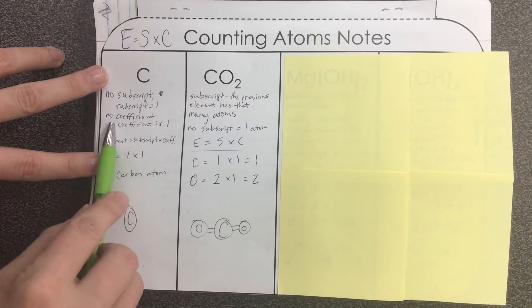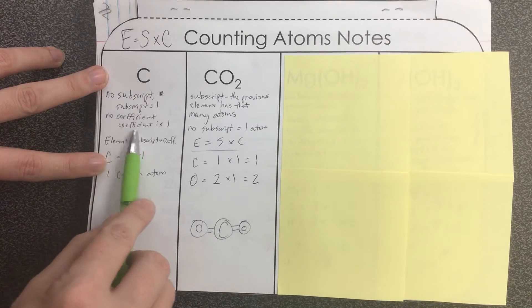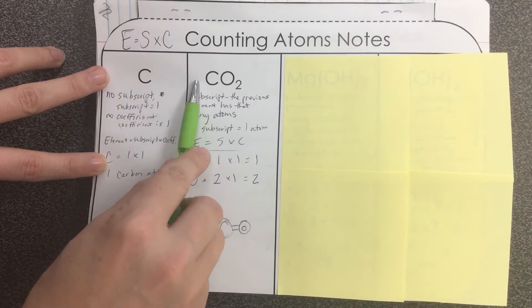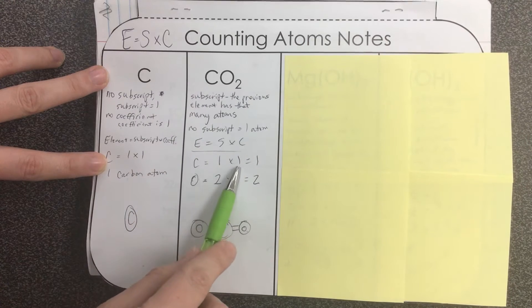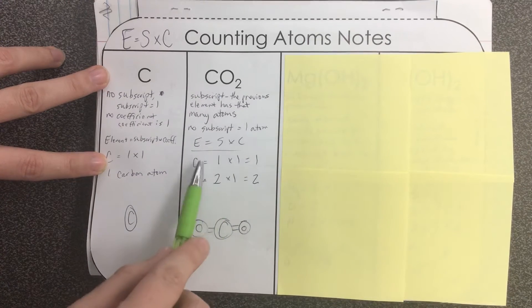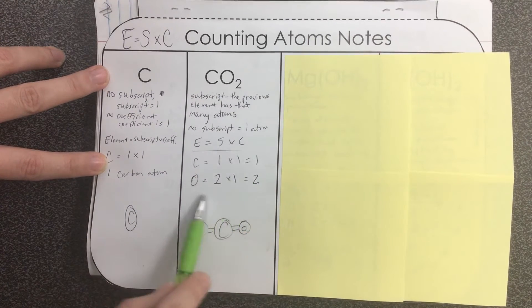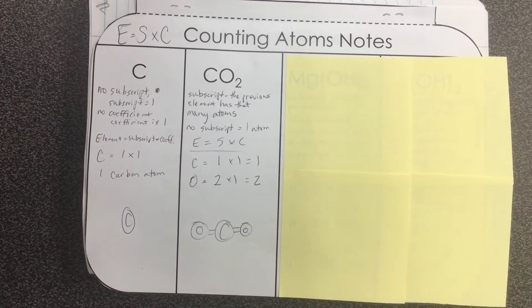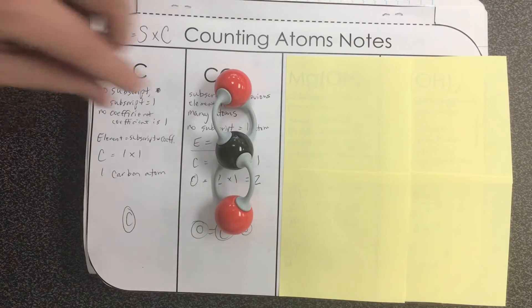My coefficient, again from true use notes, if there's no coefficient, the coefficient is one. It's understood to be one. So we put that there. Multiply those together and we have one carbon and two oxygens, again to make a carbon dioxide molecule.